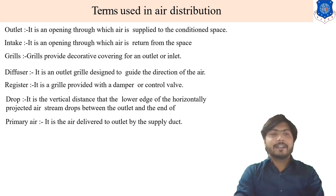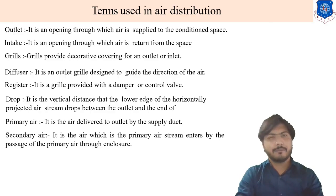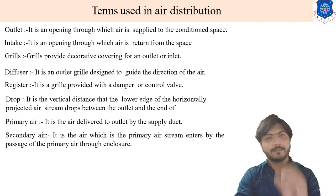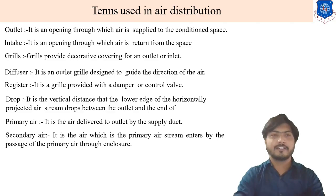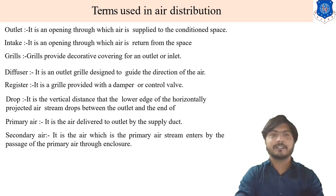Next is primary air. It is the air delivered to the outlet by the supply duct. Just remember the definitions of these terms — you only need to recall definitions for two to three marks. These terms explain the terms used in the air distribution system.